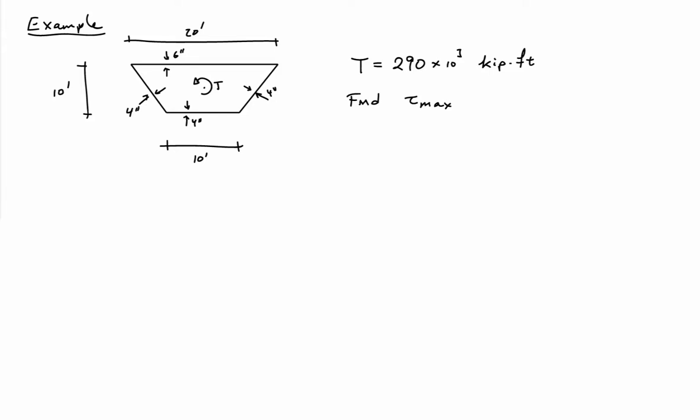In this example, let's consider a tube that has a trapezoidal cross-section, something that maybe you'd see in a bridge deck, and it's subjected to a torque of 290,000 kip feet.